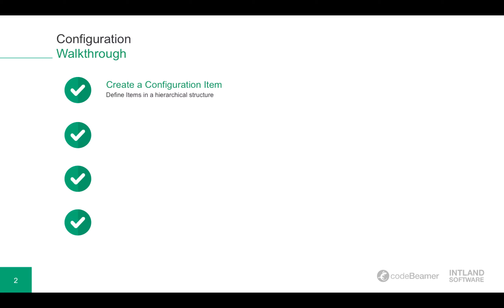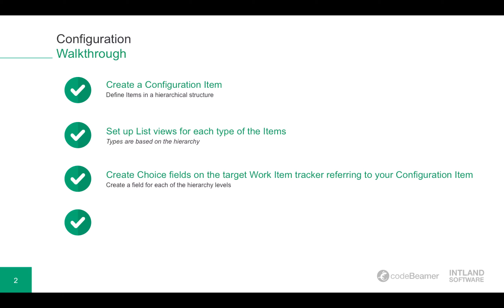First, I will create a configuration item to define the items in a hierarchical structure. Then, once I've defined my items, I will set up certain list views for each type of the items defined. These list views will be based on the hierarchy. Then, I will need to create the choice fields on my target work item tracker, referring to our configuration items.